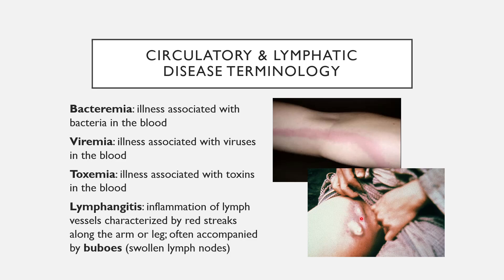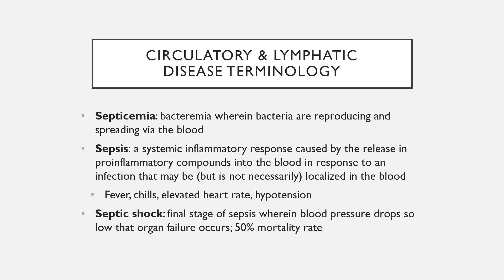Swollen groin lymph nodes are an example of buboes, which can occur throughout the body — in the groin, neck, armpits, and other locations. It is also worth clarifying terminology surrounding blood infections. Septicemia is defined as bacteremia wherein the bacteria are not just present in the blood but are reproducing in the blood and spreading via the circulatory system.